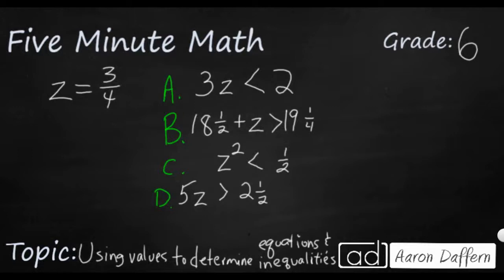So we have a new set of expressions here. They are inequalities rather than equations, because we have greater than or less than signs, but we're going to do the same thing. We're going to take our unknown here, z equals 3 quarters, and just plug it in.